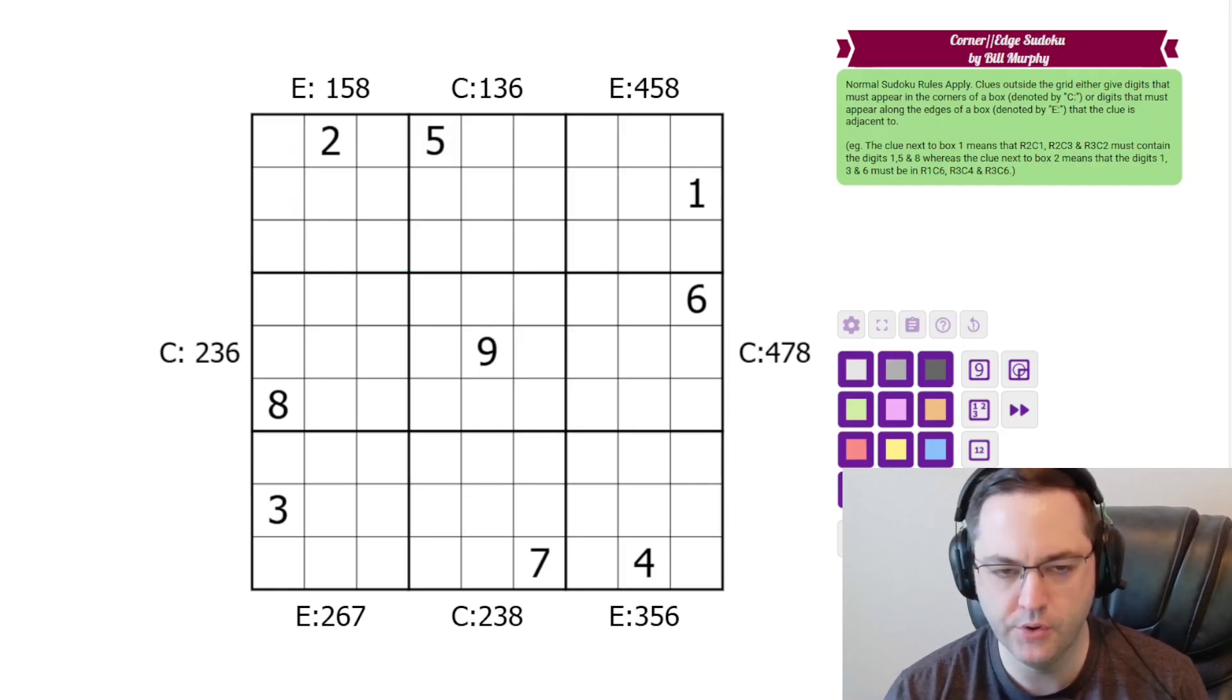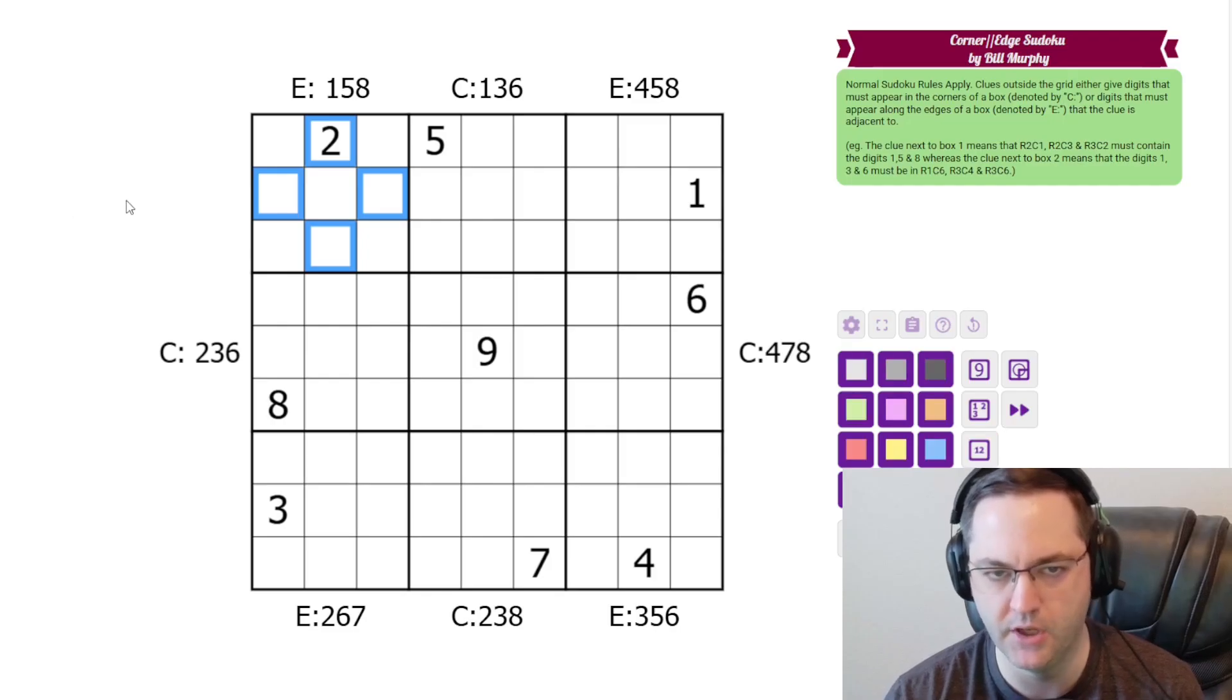Additionally, there are some clues outside the grid, and the clues tell us digits that must go either in the edge cells of the box. So these are the edge cells of this box. This clue is telling us that 1, 5, and 8 go in those cells somewhere.